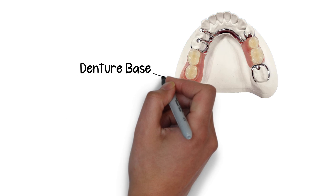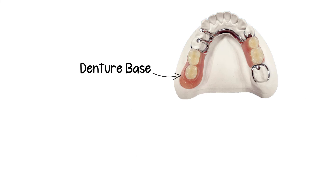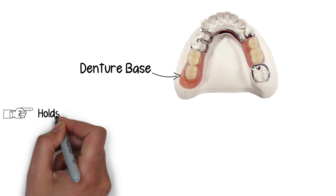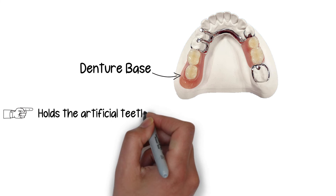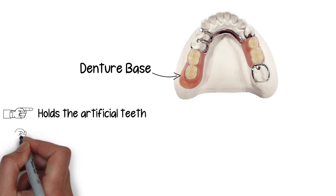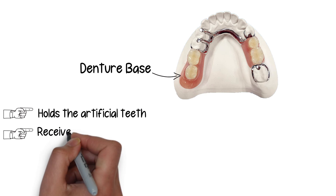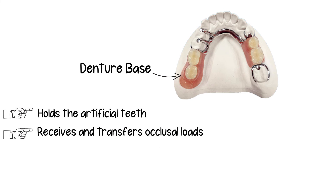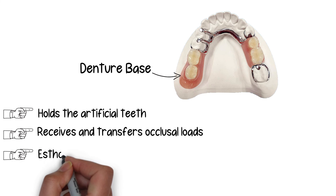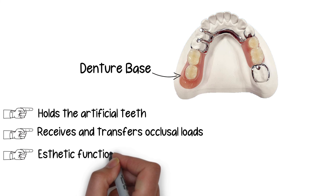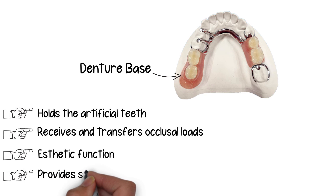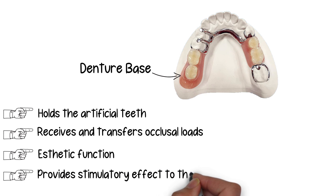The next component is the denture base. The denture base essentially supports the artificial teeth and holds them in place. It also receives the occlusal forces and transfers them to supporting oral structures. Additionally, it has an aesthetic function by providing a more natural-looking appearance to the wearer, and it also works as a stimulator to the underlying tissues, providing stimulation that helps better maintain their form and tone over time.